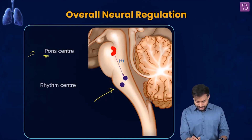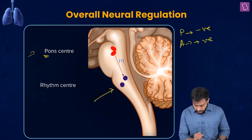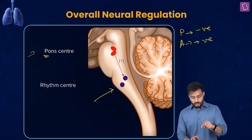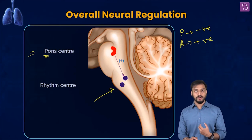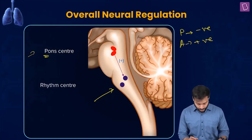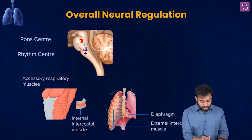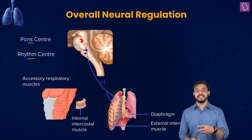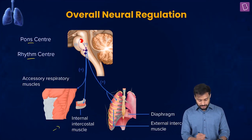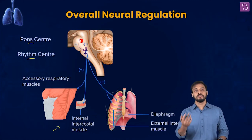The pneumotaxic center sends negative signals — negative impulse — and the apneustic center sends positive impulse. The pneumotaxic center sends negative impulse for control, and the apneustic center sends positive impulse, meaning increase. A quick overview of the overall neural regulation: signals move from the pons and the rhythm center into the muscles — the external and internal intercostal muscles and the diaphragm — resulting in the breathing process and your respiration.